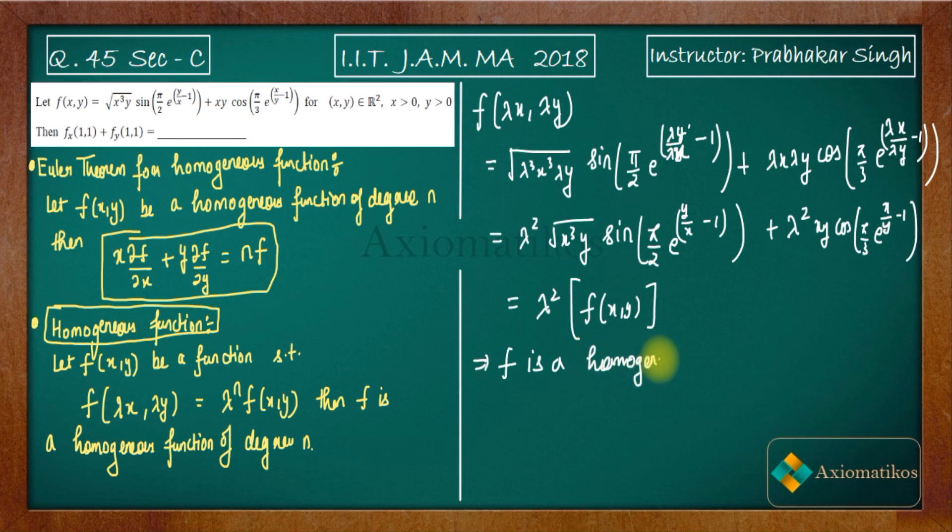This finally proves that f is a homogeneous function of degree 2. According to Euler's theorem, we get x·∂f/∂x + y·∂f/∂y = 2f.